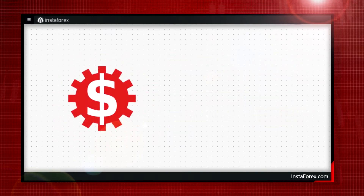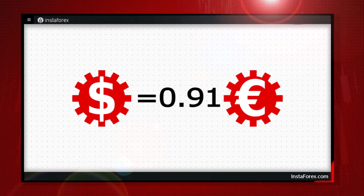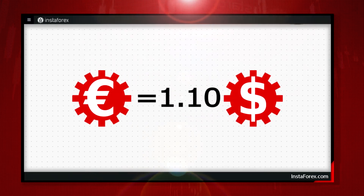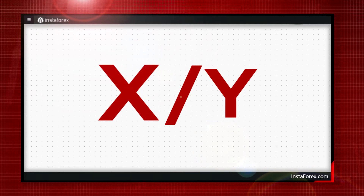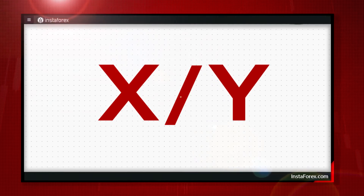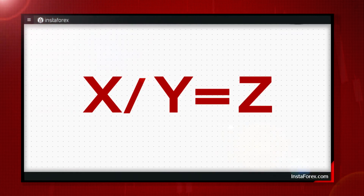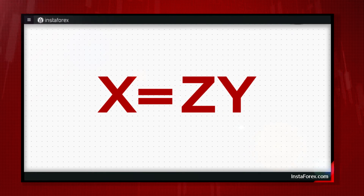To estimate the values of, for example, the greenback and euro, we need to measure the US dollar's price in euro and vice versa. So we need to know the exchange rate of one currency to another one. This currency rate is denoted as the X to Y quote. X is a base currency and Y is a quote currency. When we say that X to Y is Z, it means one unit of the X base currency may be bought or sold for Z units of the Y quote currency.